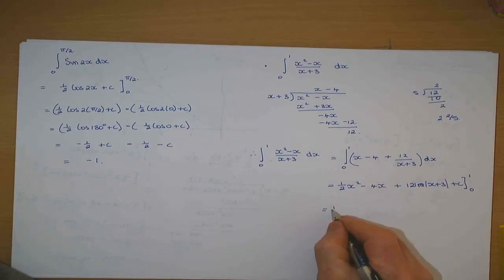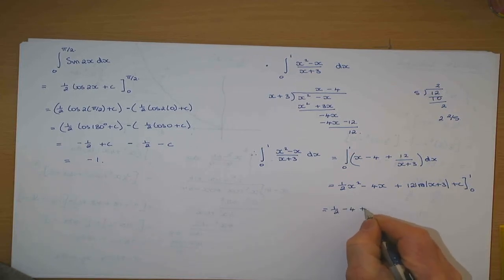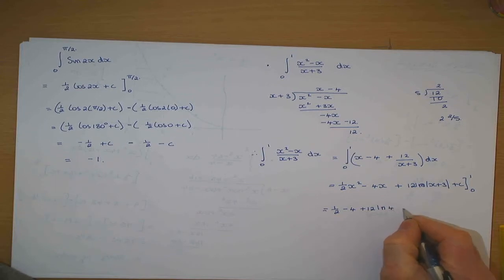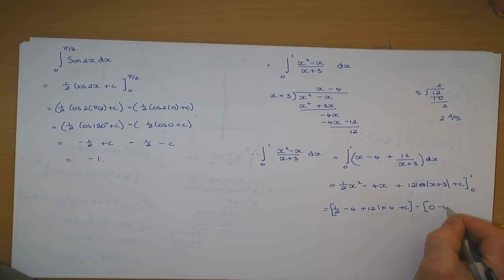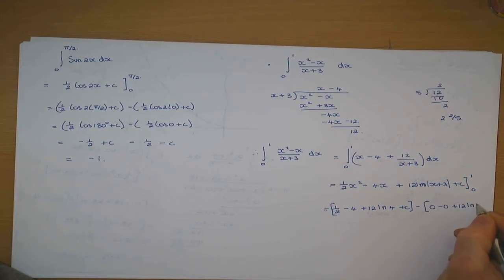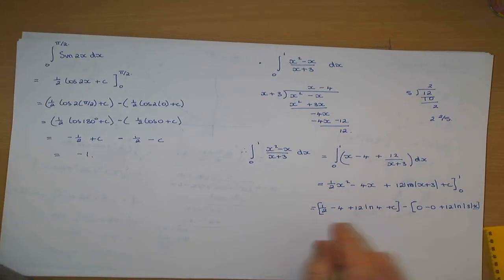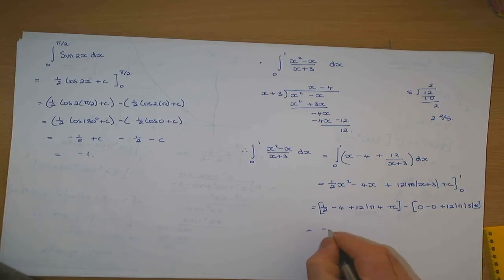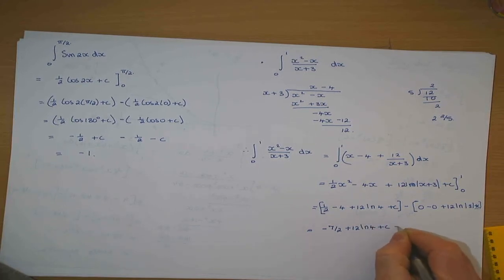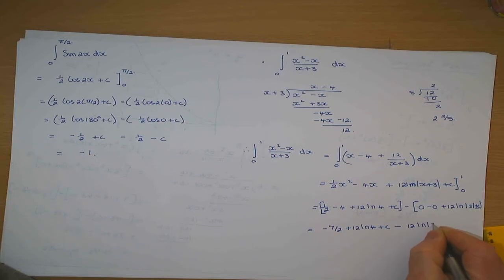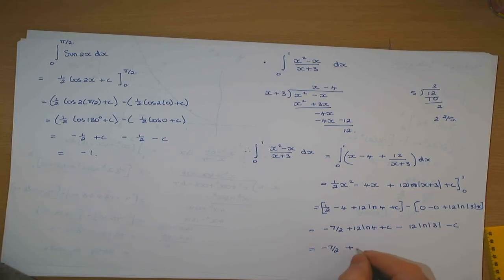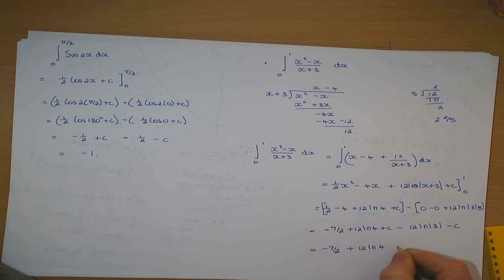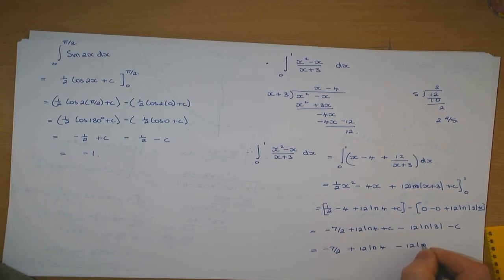Putting in one first: a half minus 4 plus 12 times log of 4, plus c. Minus — putting in zero: zero minus zero plus 12 times log of 3, plus c. Which equals minus seven over two plus 12 log of 4, plus c, minus 12 times log of 3, minus c. The c's cancel, leaving minus seven over two plus 12 log 4 minus 12 log 3.